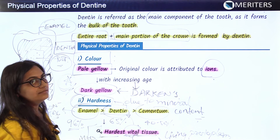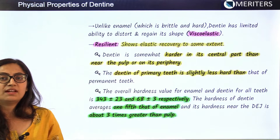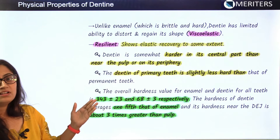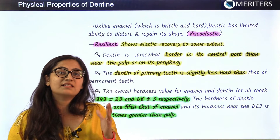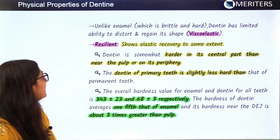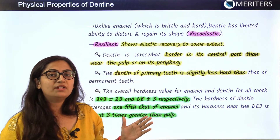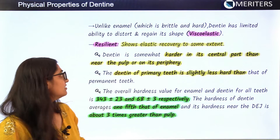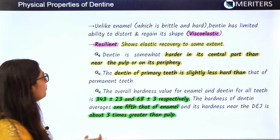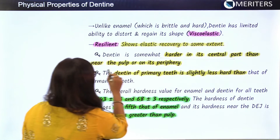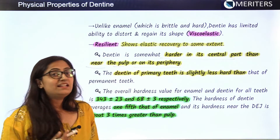Next are the properties of brittleness and viscoelasticity. Unlike enamel which is brittle and hard, dentine has a limited ability to distort and regain its shape, making it viscoelastic. Resiliency is the property of elasticity — dentine shows elastic recovery to some extent. Dentine is somewhat harder in its central part than near the pulp or on its periphery.